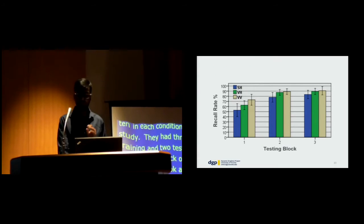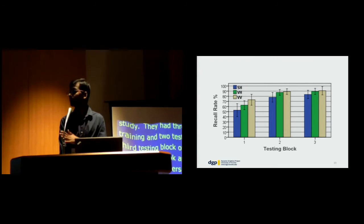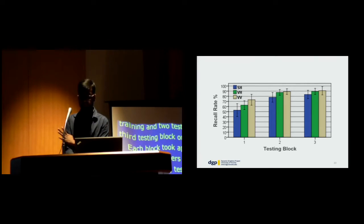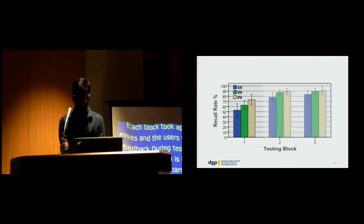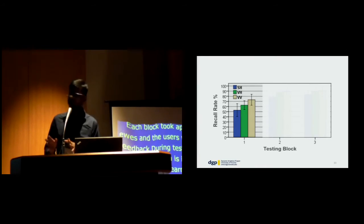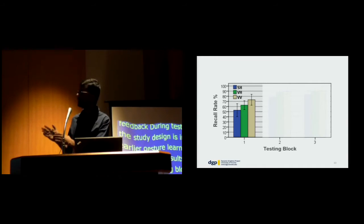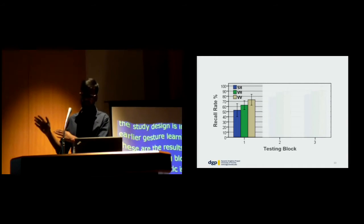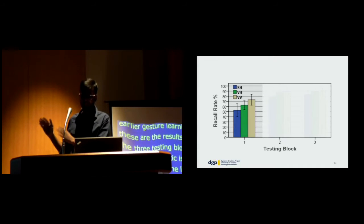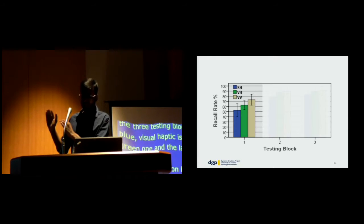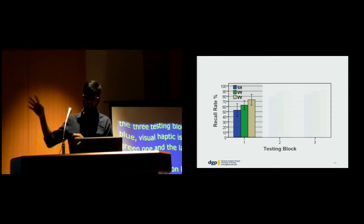These are the results for the recall rate in the three testing blocks. Sound haptic is blue, visual haptic is green, and the last one is visual-visual. Let's focus on block one. There are differences of about 10% between each condition. Visual-visual has the highest recall rate at 70%, then visual haptic, then sound haptic. The difference between visual-visual and sound haptic is statistically significant.